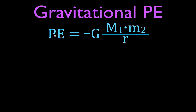It says here that the gravitational potential energy is equal to minus G, the gravitational constant, times m1, the mass of one object, times m2, the mass of the other object, divided by the distance between them. In this video, I'm going to go over why we have this negative sign here and how we use that mathematically.